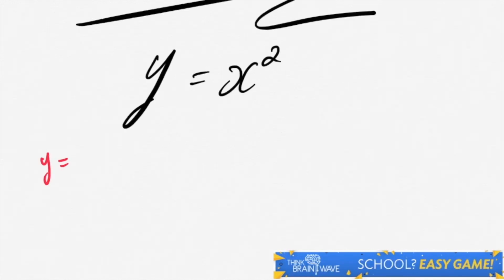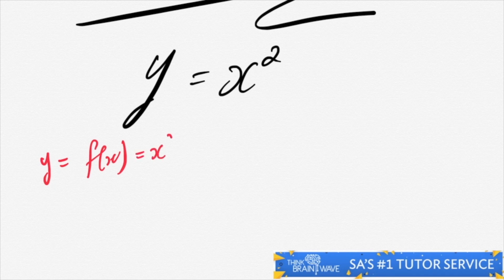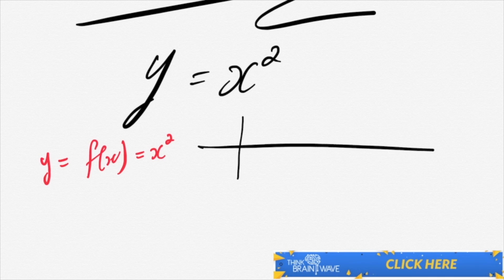In this video we'll be discussing quadratic parabolas. If we look at this equation, y equals x squared, y is also equal to f of x, and f of x equals x squared. Just make sure that you understand that y and f of x are one and the same thing.